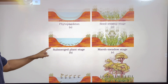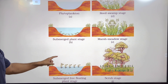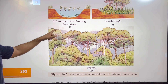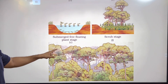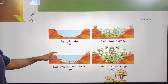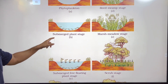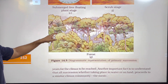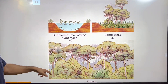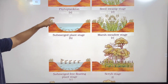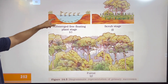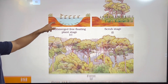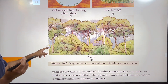An important fact is that all succession, whether taking place in water or on land, proceeds to a similar climax community. The seral stages of hydrarch succession are: 1. Phytoplankton stage, 2. Submerged plant stage, 3. Submerged free floating plant stage, 4. Reed swamp stage, 5. Marsh meadow stage, 6. Scrub stage, 7. Forest stage — the climax community.